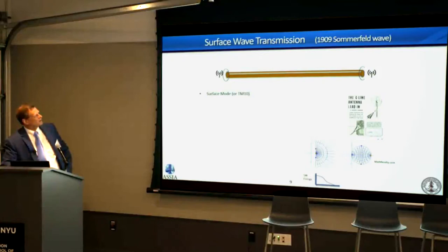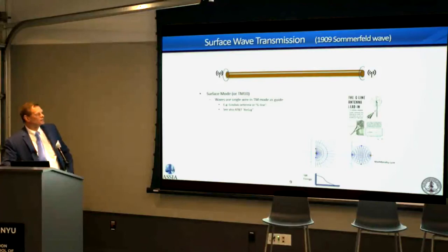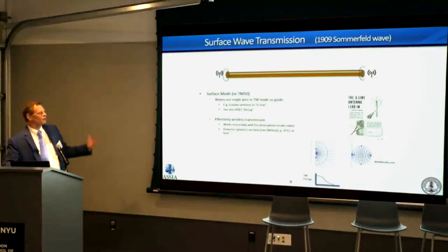Surface waves have been used in G-lines for television antennas, and AT&T's AirDig effort uses power lines with surface wave modes. These are wireless transmissions that the wire helps guide. There are questions about what the insulator does to propagation around the wire. If the wire is bent, energy tends to wander off in the direction it was going, causing attenuation. Two twisted wires hold it a bit better, but there's still some drift when bent.